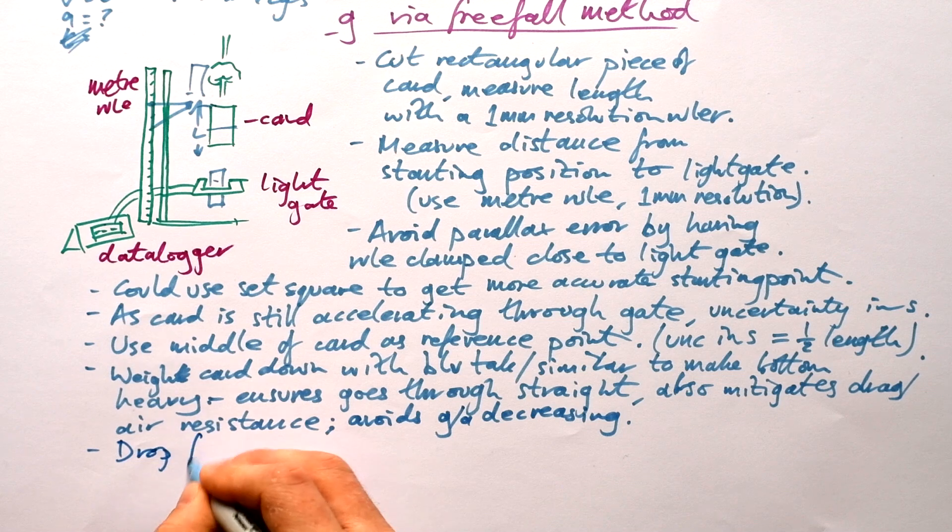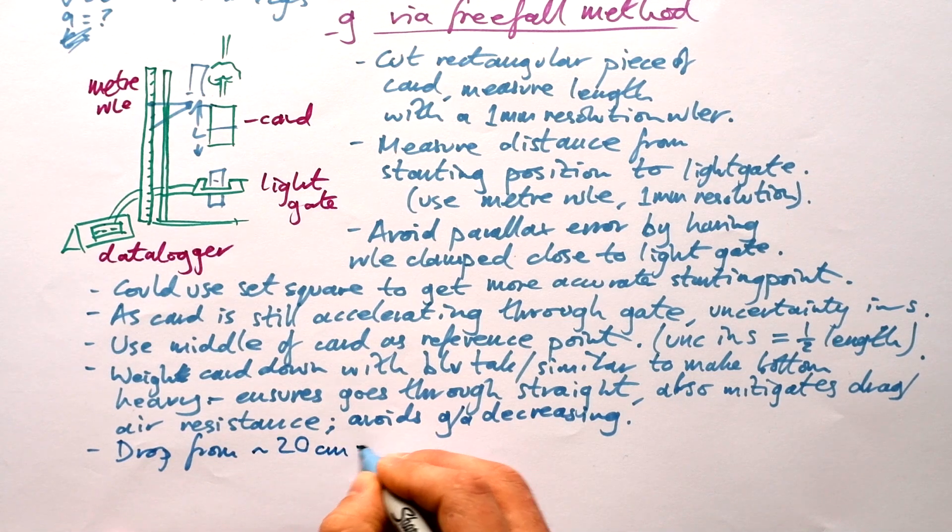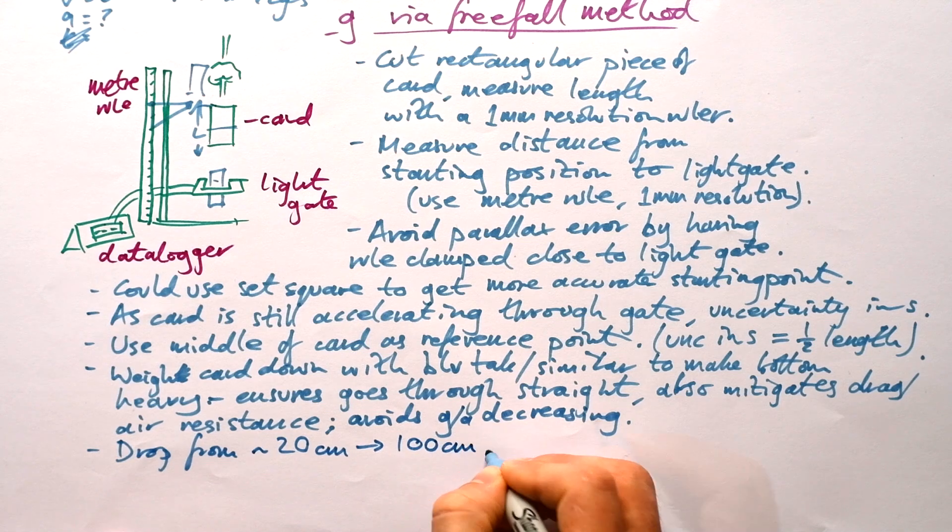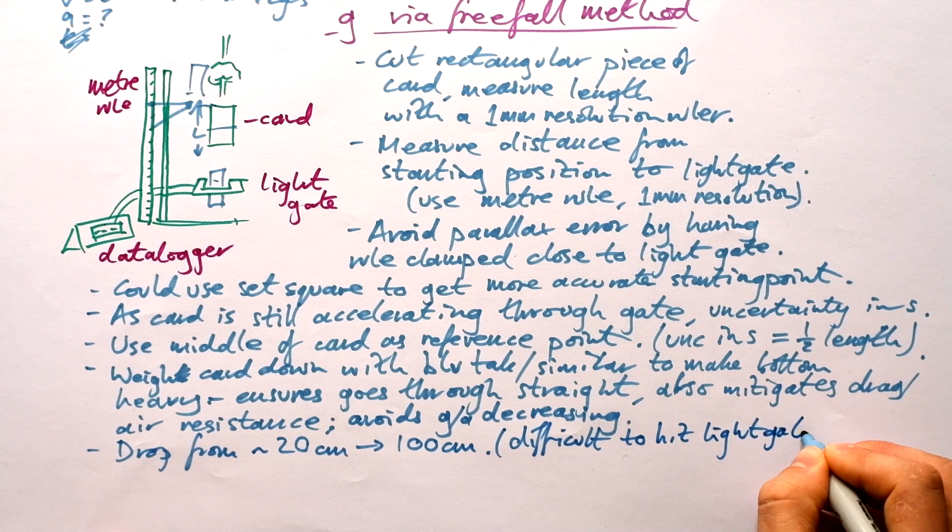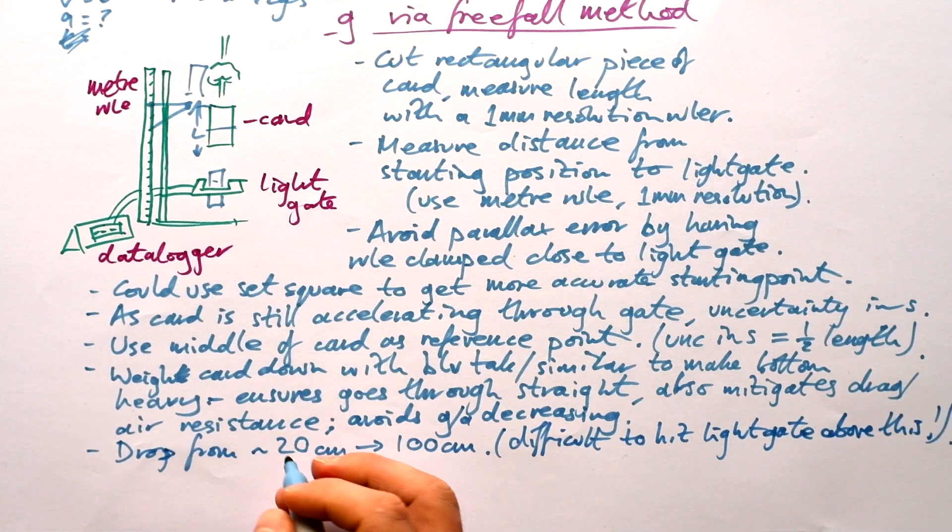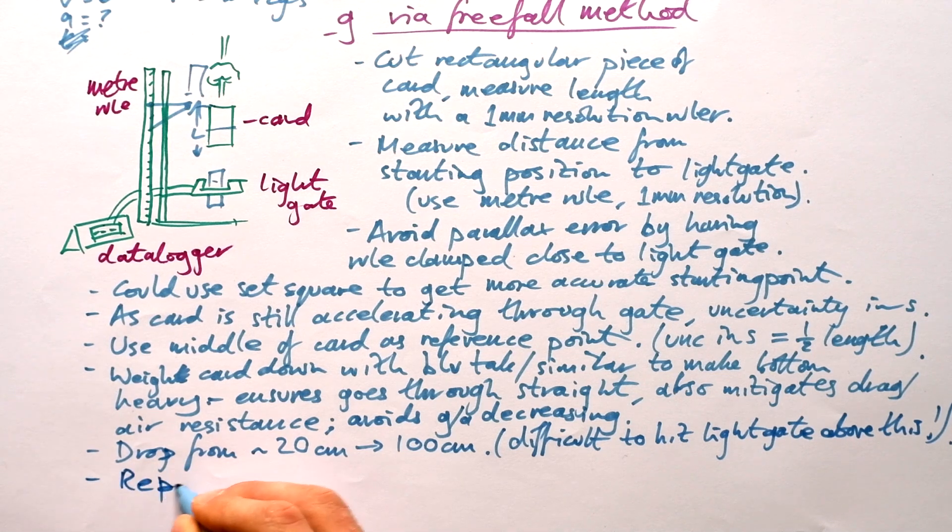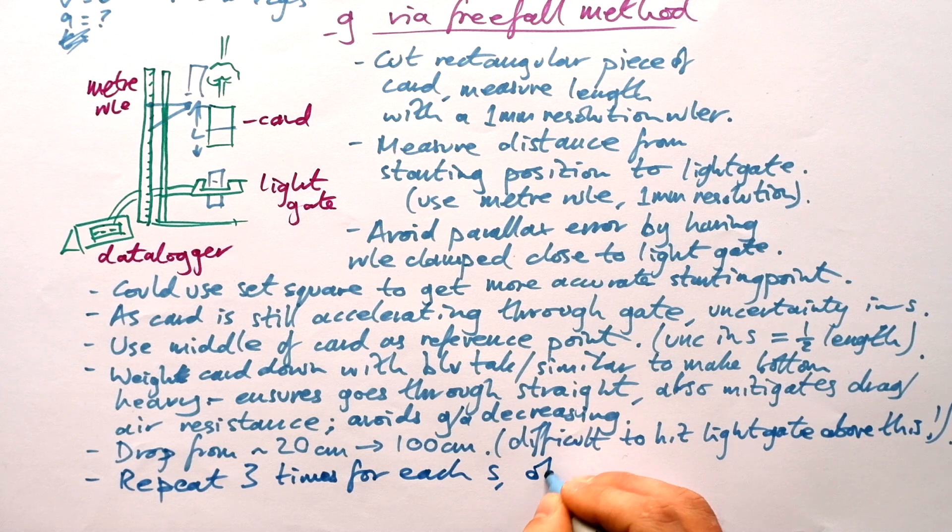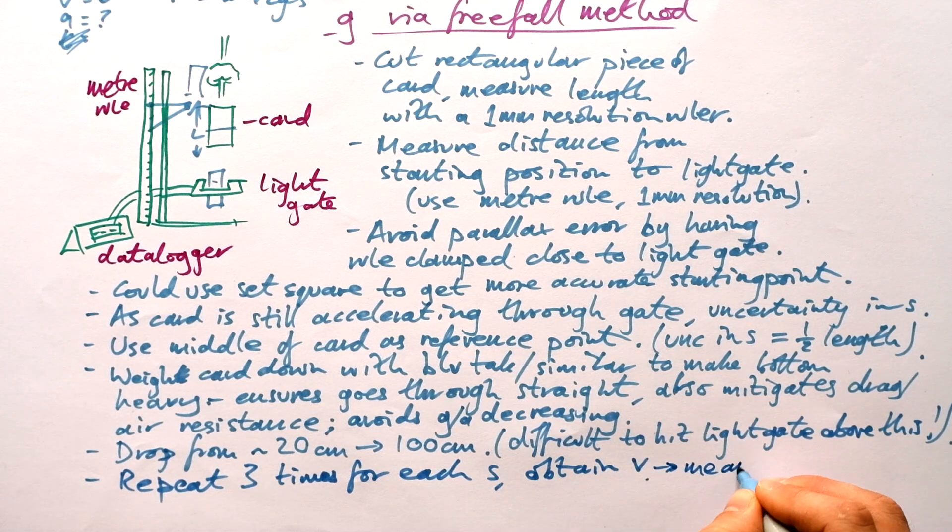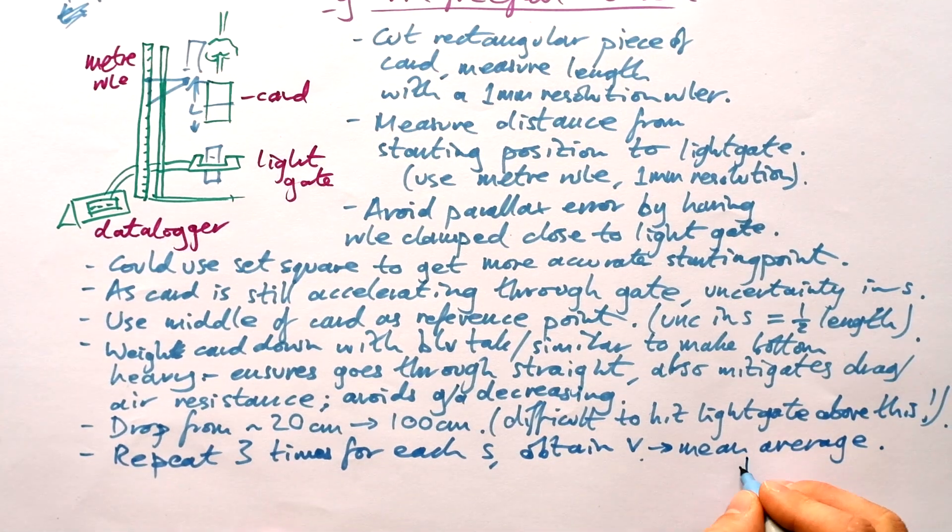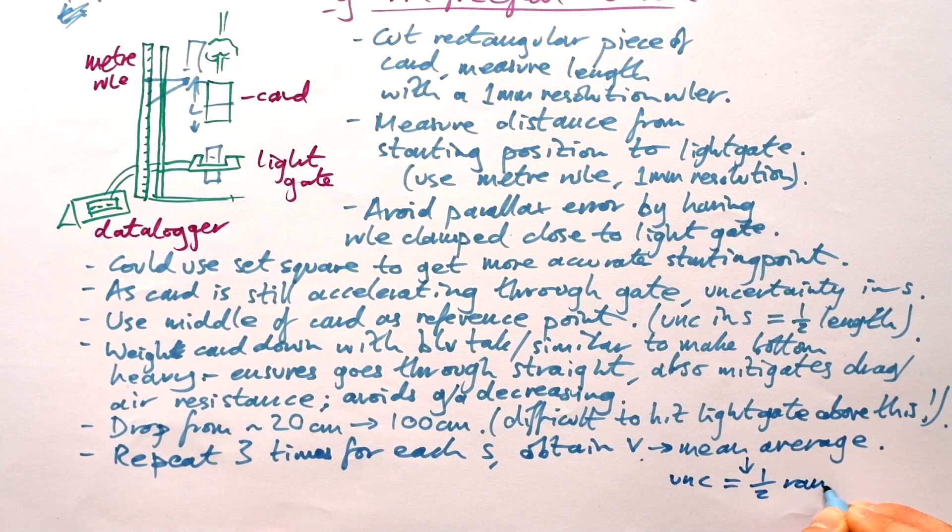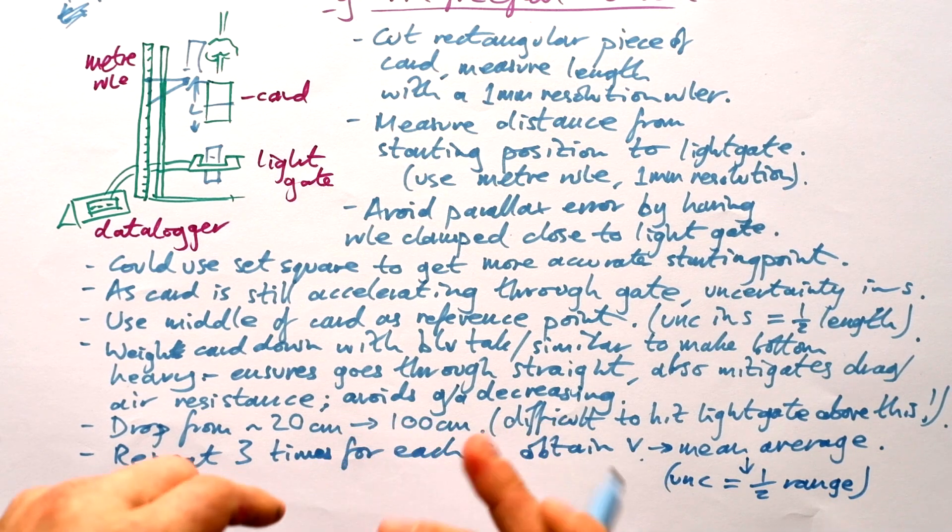What else? Well, we're going to drop from say 20 centimeters up to 100 centimeters. Why not higher than 100 centimeters? Difficult to hit light gate above this and we can go up in 20 centimeter increments. We're going to repeat it three times for each S and we're going to obtain V and then we're going to calculate a mean average. Now, because we are doing an average from three readings, that means that there is inevitably going to be an uncertainty in this as well. Uncertainty in the average is going to be half the range of results. So that's going to be what we plot on our graph if we want to do line of worst fit, line of best fit.